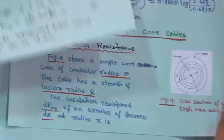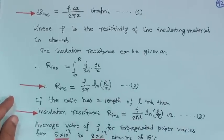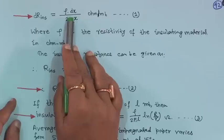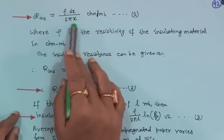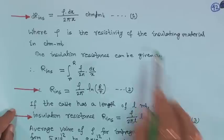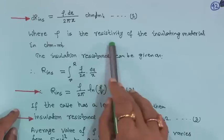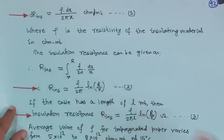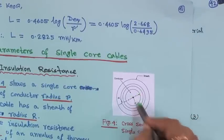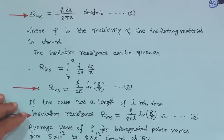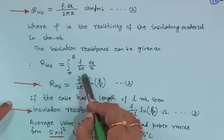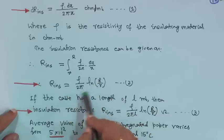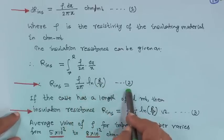Therefore, dR_insulation = ρ × dx / (2πx) ohm per meter, where ρ is the resistivity of the insulating material in ohm-meter. Integrating from small r to capital R: R_insulation = ρ / (2π) × ln(R/r) — this is equation 2.